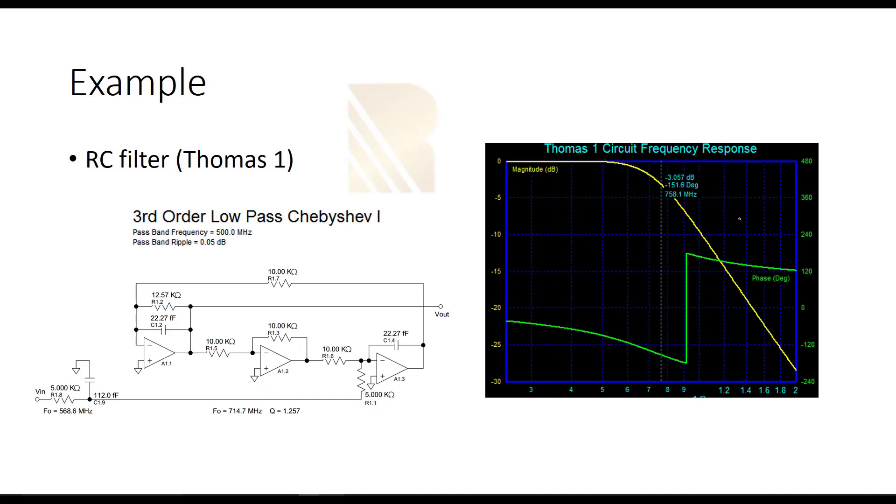Another example is a RC filter, a third-order low-pass Chebyshev filter. As you see here, we have an active component. This is a RC filter with op-amps. We need three op-amps and a couple of RC components here in this structure. As you see, the input and output here.